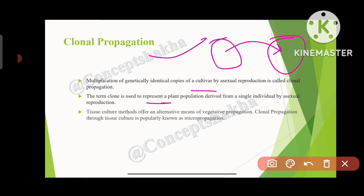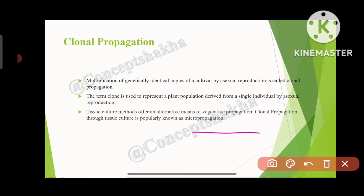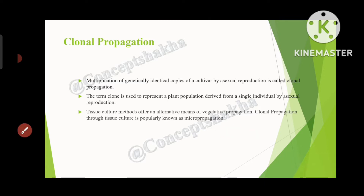Tissue culture method offers an alternative means of vegetative propagation. Clonal propagation through tissue culture is popularly known as micropropagation. So when we perform clonal propagation through the tissue culture method, it is known as micropropagation.